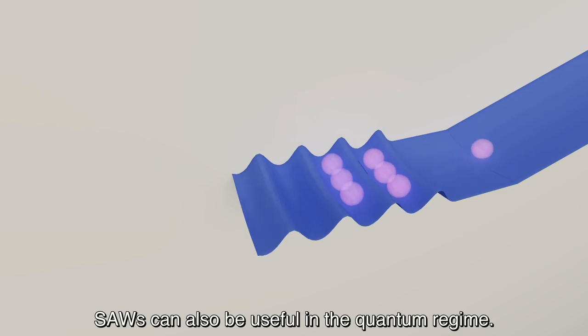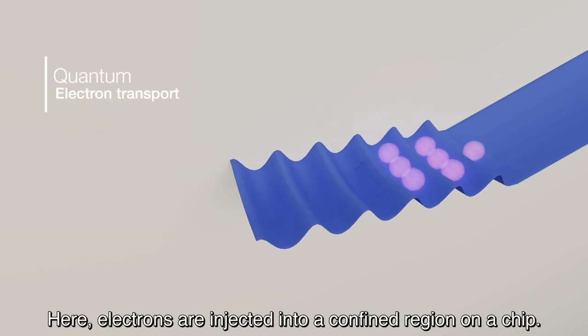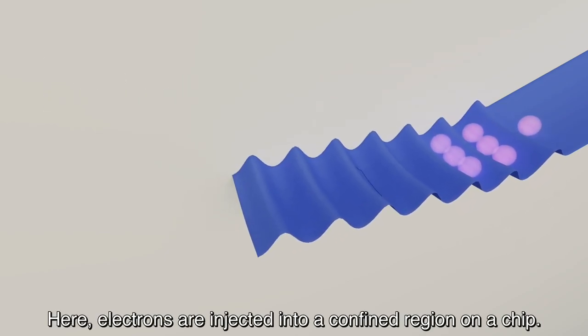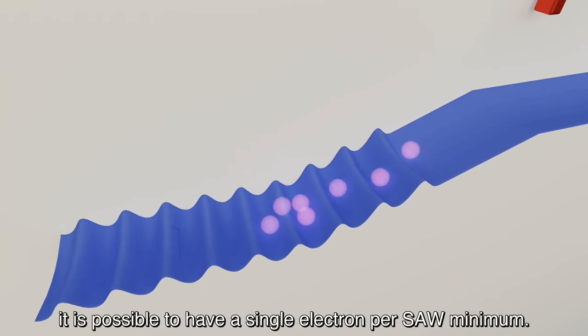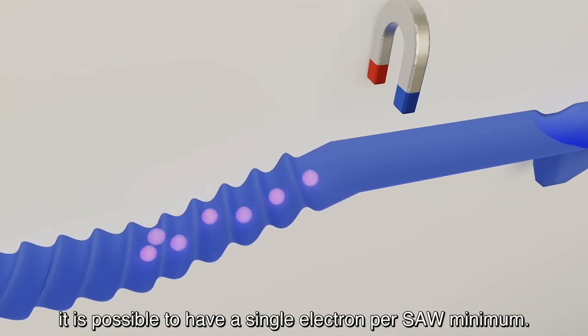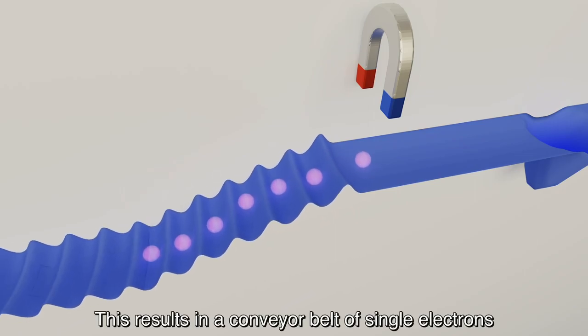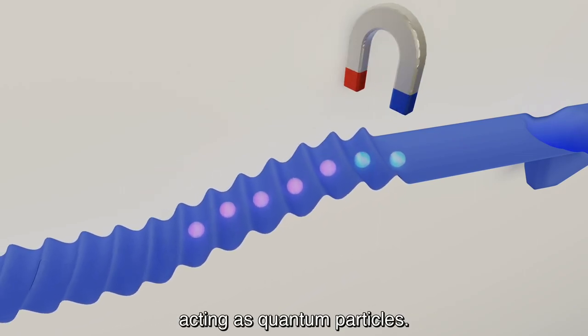SAWs can also be useful in the quantum regime. Here, electrons are injected into a confined region on a chip. By carefully adjusting the applied voltages, it is possible to have a single electron per SAW minimum. This results in a conveyor belt of single electrons acting as quantum particles.